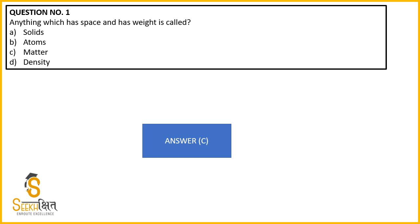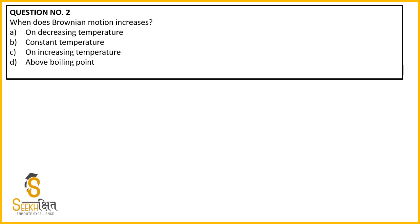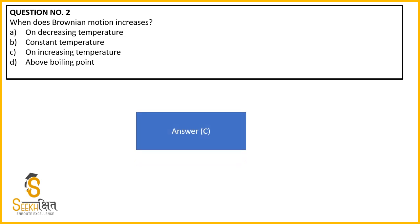The next question is: when does Brownian motion increase? Brownian motion means the particles of matter are constantly moving. How can we increase this Brownian motion? We can increase the temperature. If we increase the temperature, the Brownian motion will increase. So the answer is C — increase the temperature.